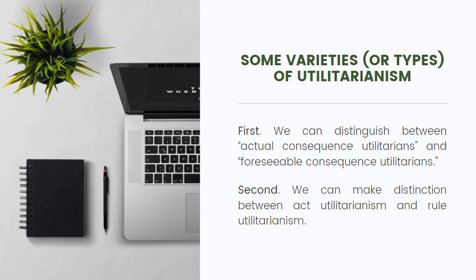Now let's talk about the second variety: act utilitarianism versus rule utilitarianism. In act utilitarianism, you choose which action produces more good, more pleasure, more happiness. However, in practice it is difficult because everything we might do has a potential effect on other people, so we need to examine the consequences carefully and pick the one with the best outcome.